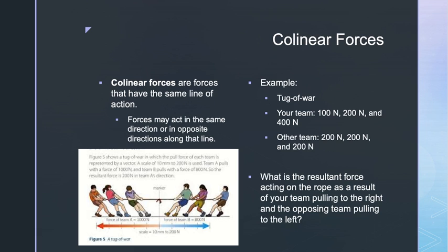Since your team is pulling to the right, let's assign a positive value to it. A positive or negative value indicates direction rather than implying a negative force is being applied. The other team is pulling to the left with 200 + 200 + 200 = 600 Newtons, assigned a negative value. The resultant force: 700 Newtons minus 600 Newtons equals a positive 100 Newtons, or 100 Newtons towards the right.